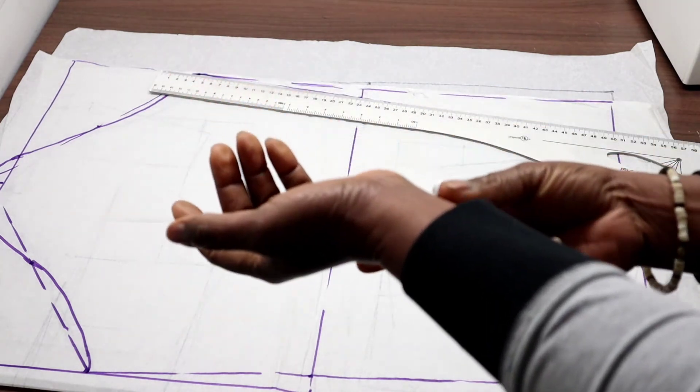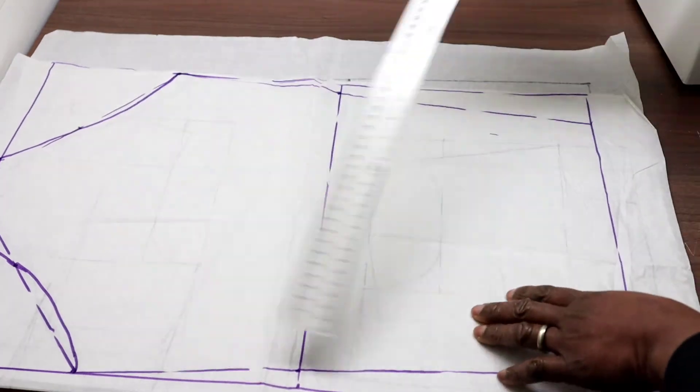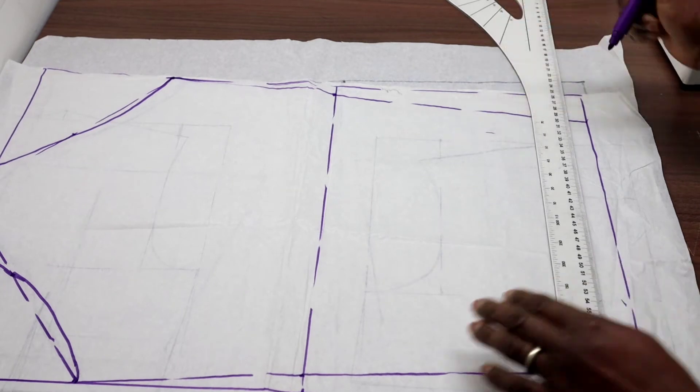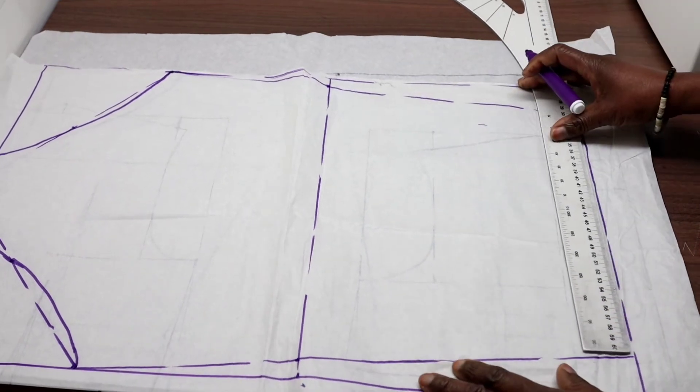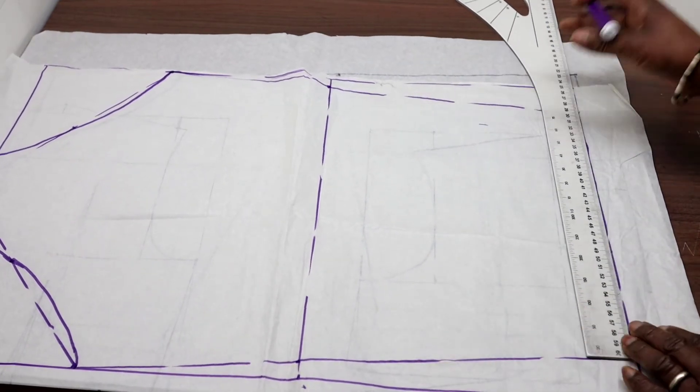Now you check your wrist. My wrist is 22 centimeters. Then when I measure this line, it's wider than 22 centimeters. So what I'm going to do, I'm going to reduce the excess.